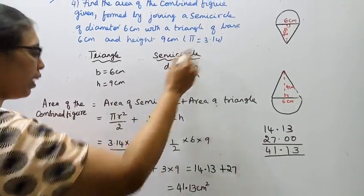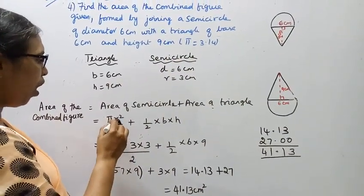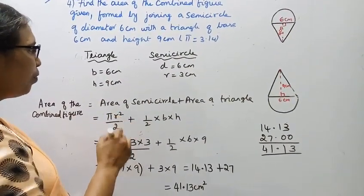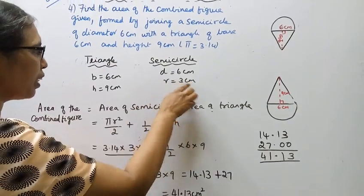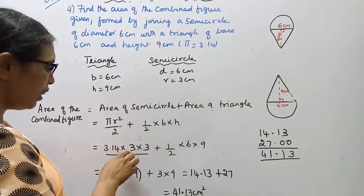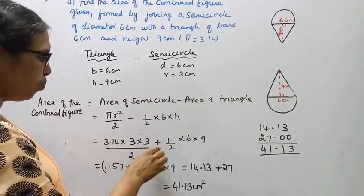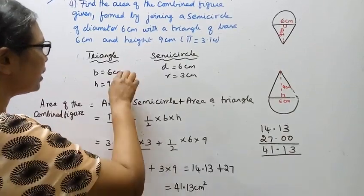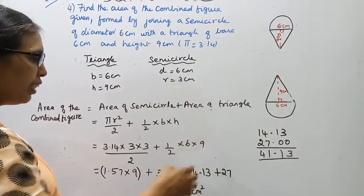For pi I use 3.14. r squared with r = 3, so 3 into 3, divided by 2. Plus one-half, base is 6, height is 9.